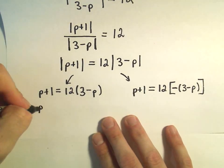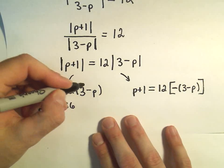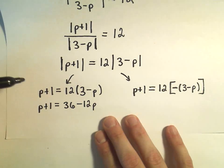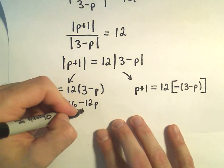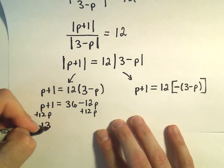So on the left, we have p plus 1. 12 times 3 is 36. 12 times negative p will be negative 12p. And then what I'm going to do is I'm going to add 12p to both sides.